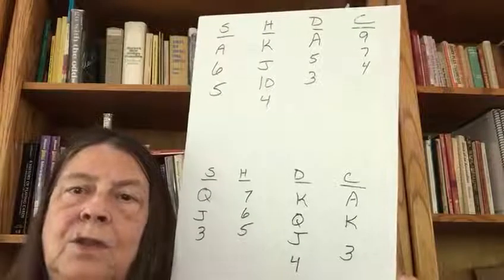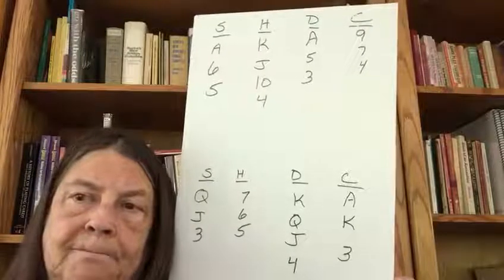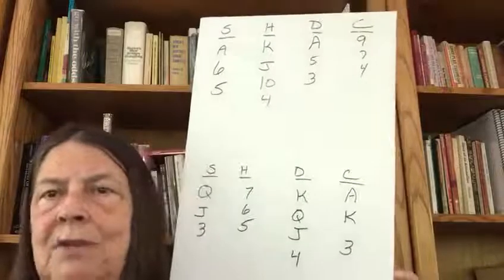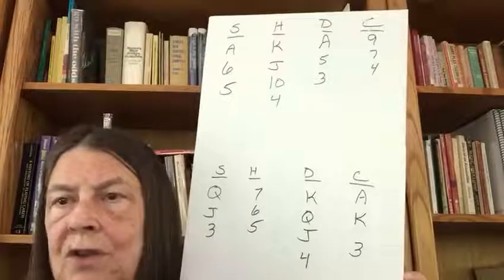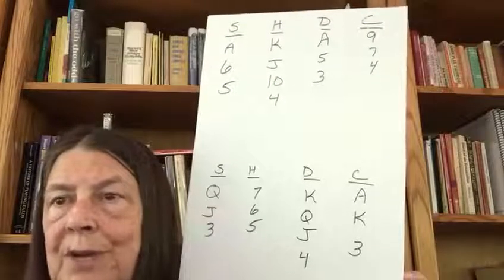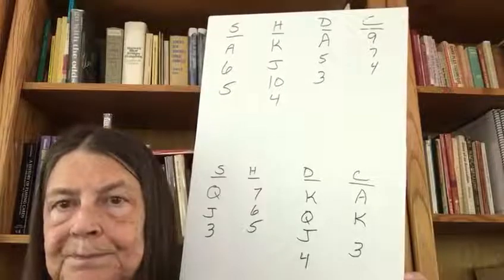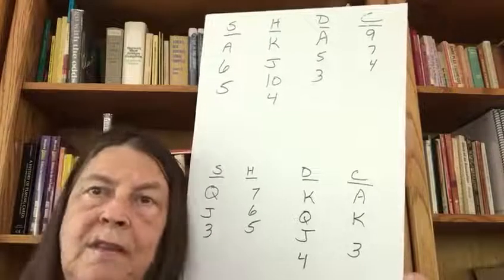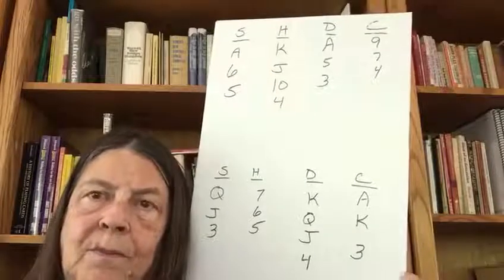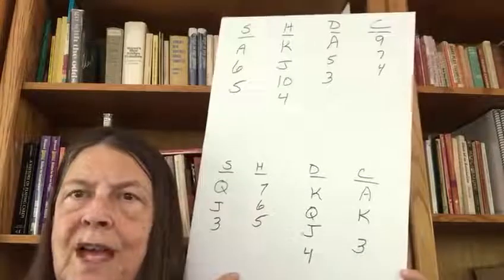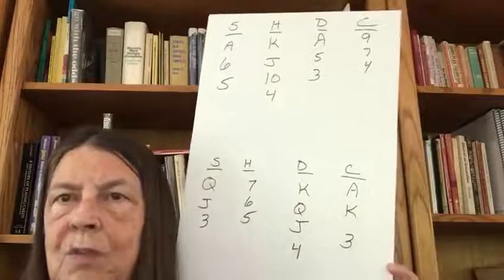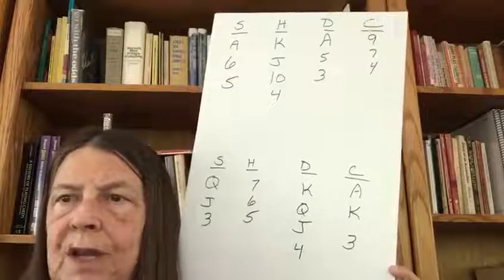What suit could possibly give us two more tricks? That suit is hearts. Even if you play on spades, you're still going to have to play on hearts to try and get a ninth trick, right? So you might as well just go ahead and play on hearts now. We're missing the ace and the queen, so you would want to lead from the south hand towards the north hand, hoping that the queen of hearts would be on your left.